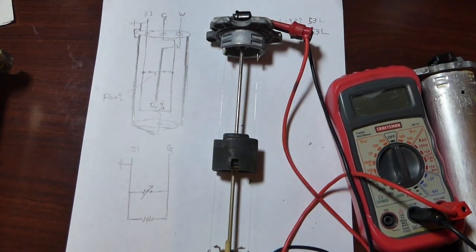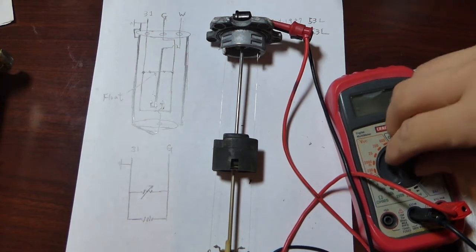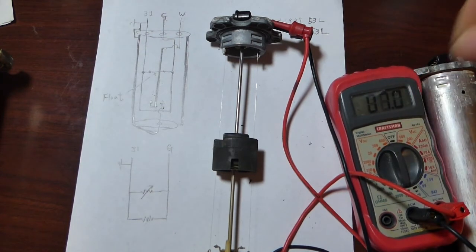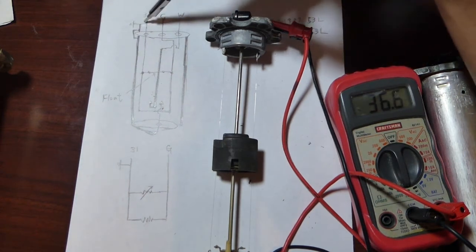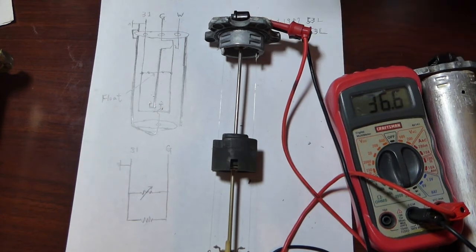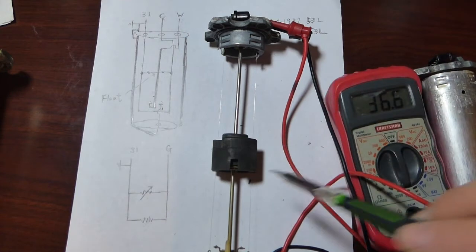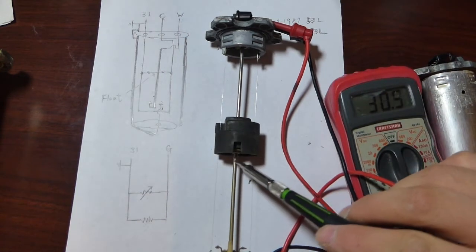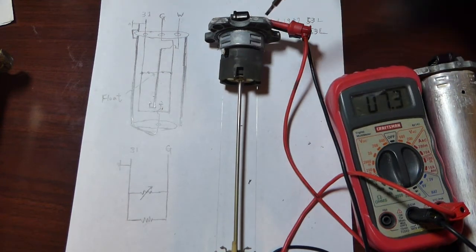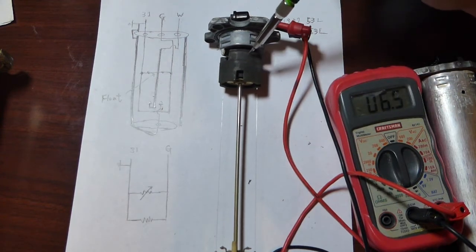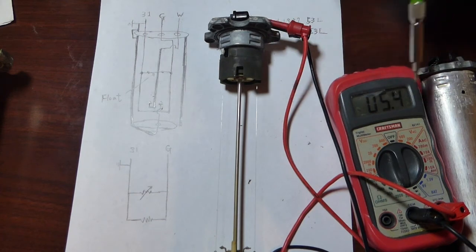Let me turn on my multimeter to show you how it works. I connect my two probes, one to terminal 31 and one to terminal G. As you can see, when the float goes up, the resistance is going down. When it's at the maximum, it's supposed to have like 5 ohms.